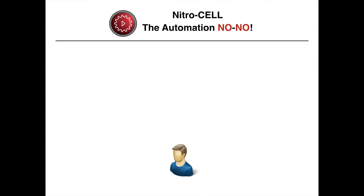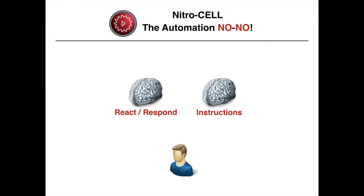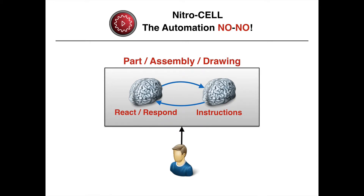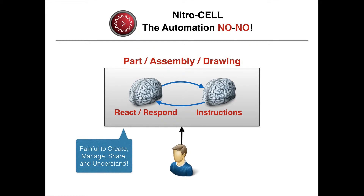It's a much cleaner approach, but that really hinges on one of the big automation no-nos within Creo — you have these capabilities where you want things to react and respond accordingly, and you have instructions that you want to collect, process, and make happen. That relationship is typically very close, meaning you're updating relation files and setting relations between parts, assemblies, and drawings so that everything automatically updates and the right views and features show up. The problem is that when you put all of this within the Creo side — meaning 100% of the logic goes that direction — you really create a maintenance nightmare. It's painful to create, manage, share, and understand for other people down the road.